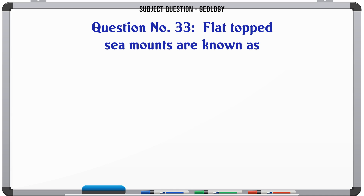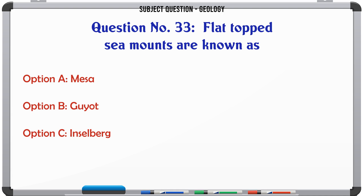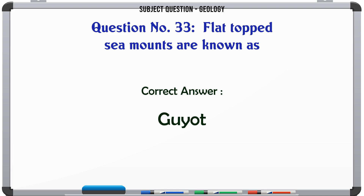Flat-topped sea mounts are known as: A. Mesa. B. Guyot. C. Inselberg. D. Monadnock. The correct answer is Guyot.